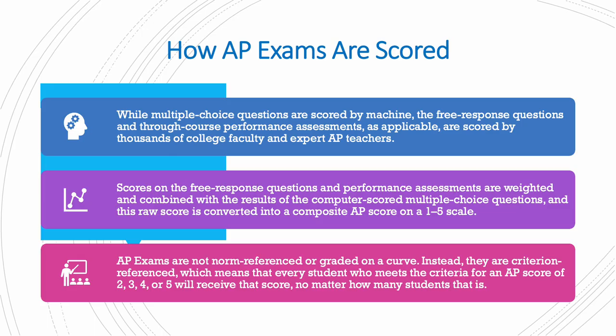How are AP exams scored? While the multiple choice questions are scored by machine, the free response questions are scored by thousands of college faculty and expert AP teachers. Scores on the free response questions and performance assessments are weighted and combined with the results of the computer-scored MCQs, and this raw score is converted into a composite AP score on a 1 to 5 scale. AP exams are not norm-referenced or graded on a curve — instead they are criterion-referenced, which means that every student who meets the criteria for an AP score of 2, 3, 4, or 5 will receive that score no matter how many students that is.